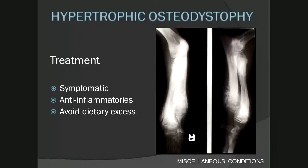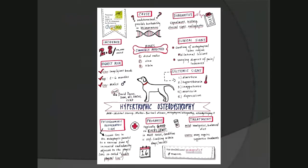Treatments for hypertrophic osteodystrophy are symptomatic — often requiring IV fluids and pain control. Anti-inflammatories may help. Dietary excess should be avoided and nutritional support provided, as these puppies can be very sick and may take a while to recover. A summary of HOD from DVM360's website is provided here — pause to read through it as it is quite nicely illustrated.